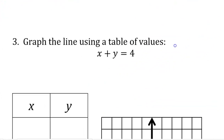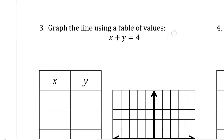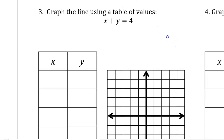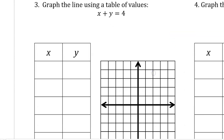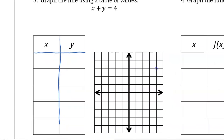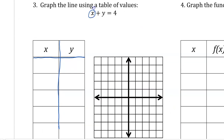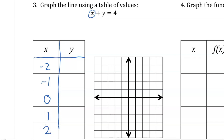Number 3: graphing using a table of values. This is often called a t-table because if you draw a line underneath your x and y without the outside box, you're separating it into the shape of a T. We'll start picking values for x, which is our input, and solving for values of y, our output. We'll take some negative values, 0, and some positive values and plug them in.